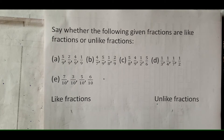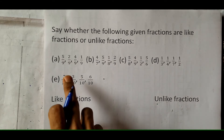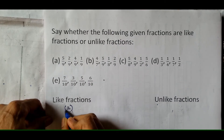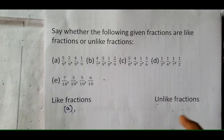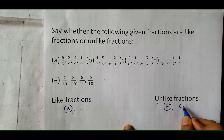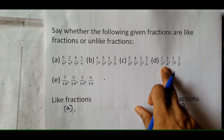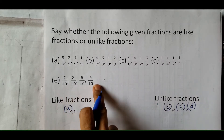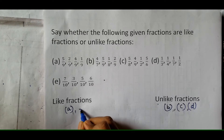Say whether the following given fractions are like fractions or unlike fractions. Fractions having the same denominator are like fractions, and fractions having different denominators are unlike fractions. In question A, the denominator is the same — so it is a like fraction. The second one has all different denominators — unlike fraction. The third has different denominators — unlike fractions. In D, the denominators are different. And in E, the denominators are the same — so it is a like fraction.